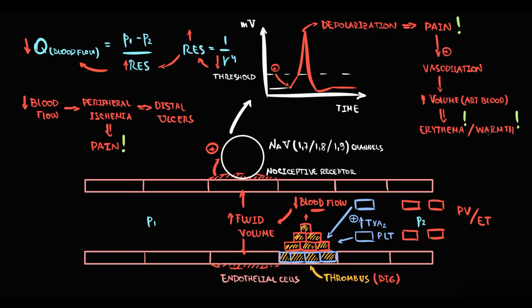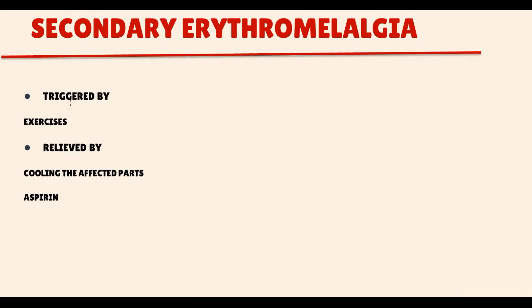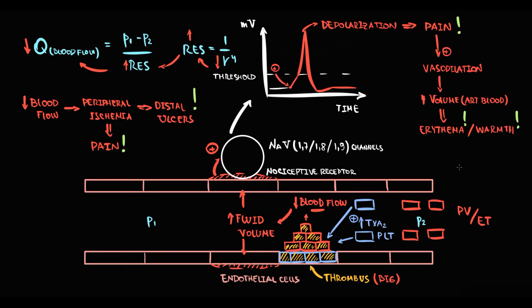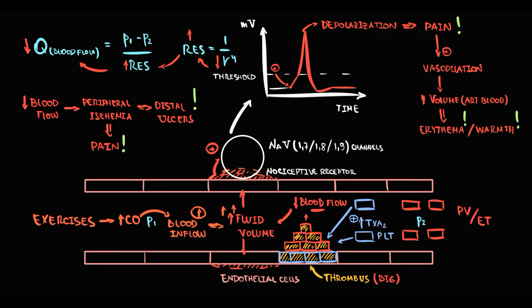Which factors most commonly provoke erythromelalgia? Actually it's physical exercises. The reason is that with exercises cardiac output increases. With increasing cardiac output, blood inflow to the affected region increases, so the volume of blood in this part proximal to thrombus increases. This causes increase in hydrostatic pressure. Increase in hydrostatic pressure causes vessel distension. Vessel distension provokes pain, and pain leads to erythema and warmth.